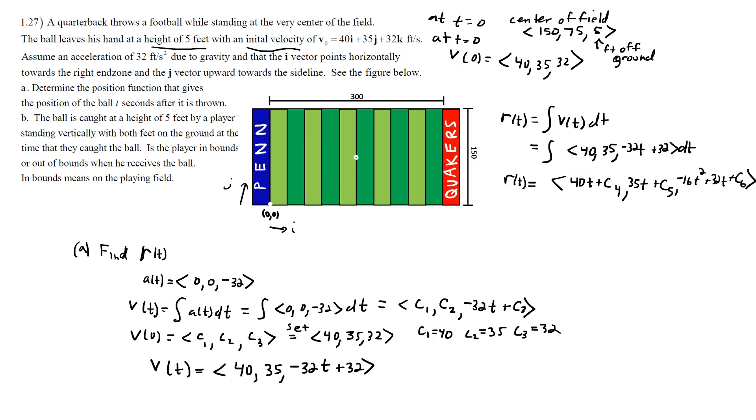And so that is your initial position. We'll call that R of 0. We'll plug 0 in, of course, and what we get out is C4, C5, C6. And so our job then is to set that equal to 150, 75, and 5. We'll have those constants. C4 has to be 150, C5 has to be 75, and C6 has to be 5.